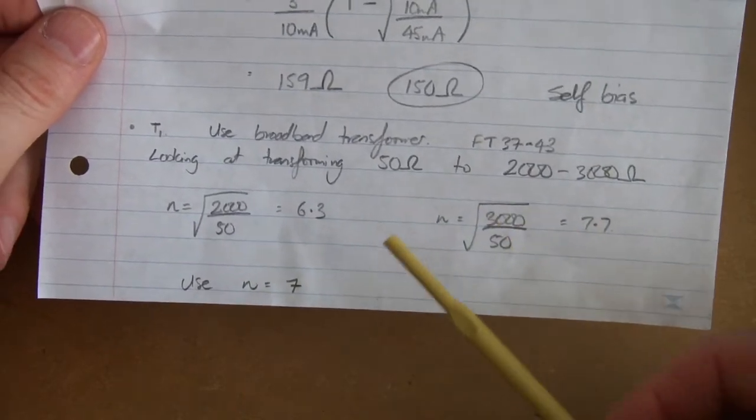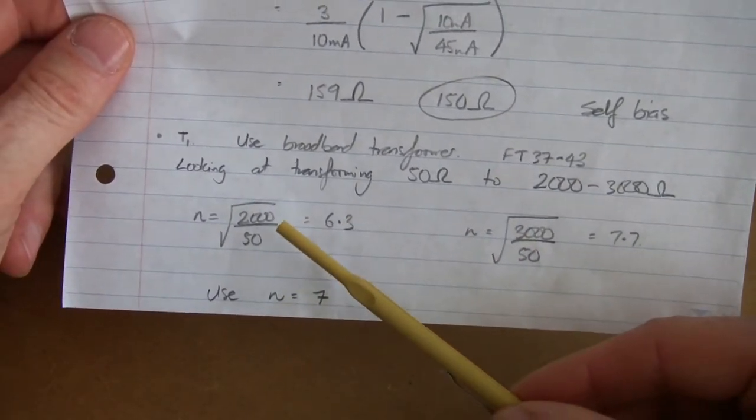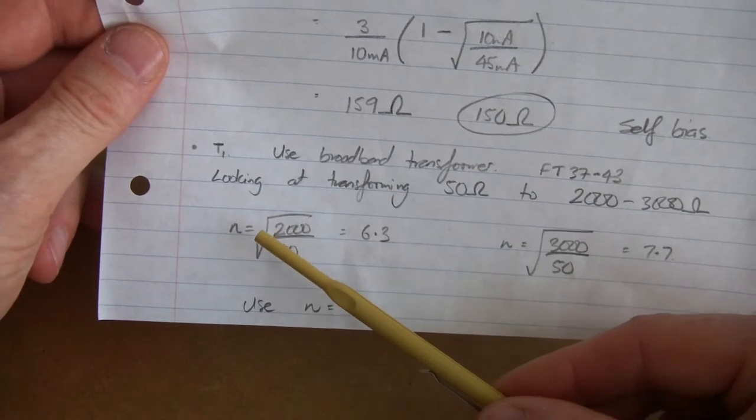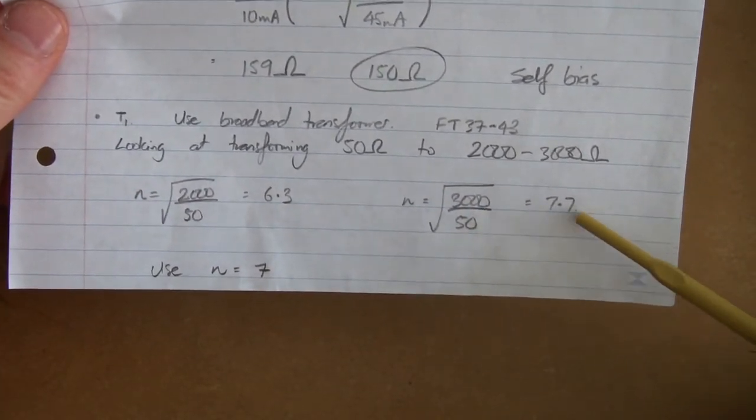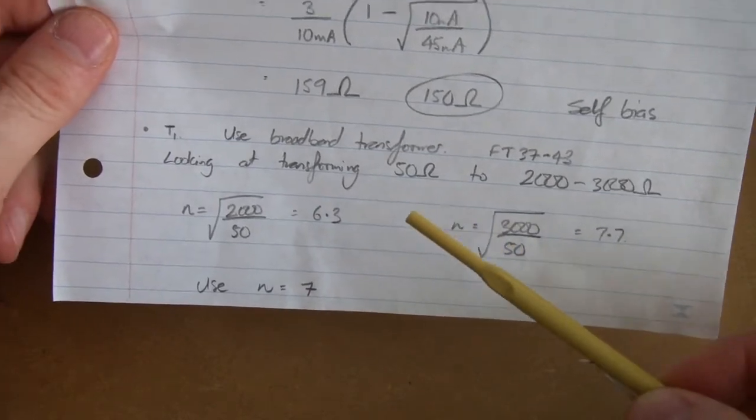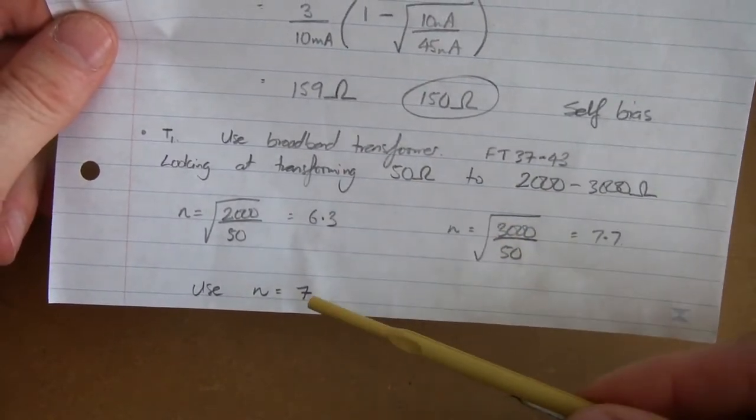looking to transform that 50 ohms up to somewhere between 2000 and 3000. And taking those two values as extremes, so by using 2000, we have an N of 6.3, and using 3000, we come up with a turns ratio of 7.7. And funny old thing, halfway between those is an N of 7. So that's what we'll use for that.